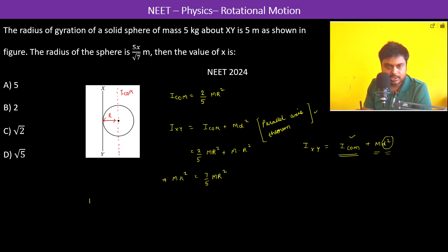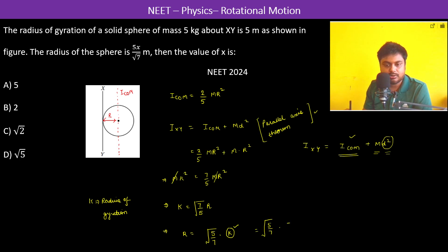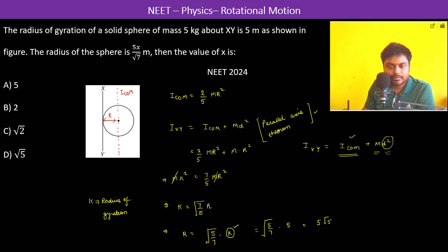Now to find the radius of gyration, I_xy equals m times k², where k is the radius of gyration. The m's cancel, so k equals √(7/5) times r, which means r equals √(5/7) times k. Since k is 5 meters, this gives r = √(5/7) times 5, which is 5√(5/7).